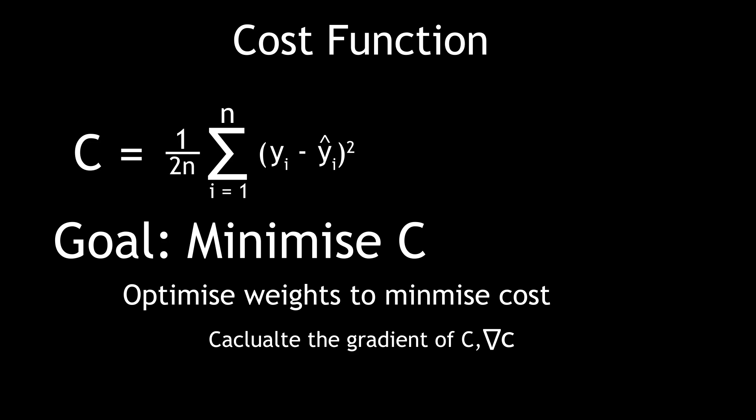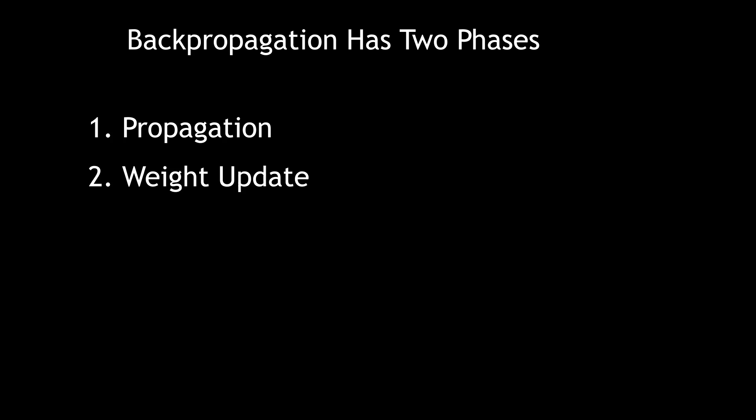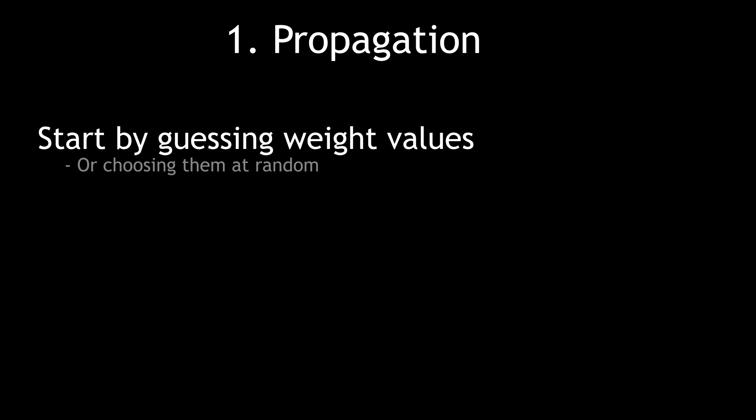I'm not going to go into the detail on the maths behind backpropagation, that requires its own video and one that I'll inevitably be making in the future. But backpropagation works by using two phases, propagation and weight update. To start the propagation phase, we give an initial guess as to what the weight should be and then enter the training inputs into the system.